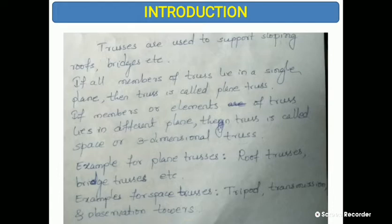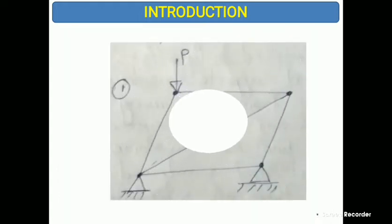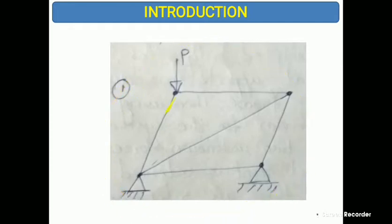Observation towers are one of the best examples of space trusses. Trusses are represented as shown — these are called the elements of the truss. In this truss, counting the elements: 1, 2, 3, 4, 5 — there are 5 elements.